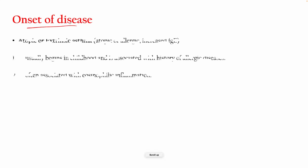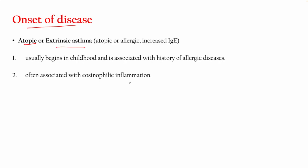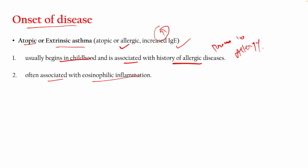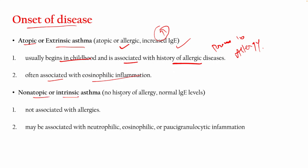Regarding onset of asthma: atopic or extrinsic asthma is an allergic type in which there is an increase in the level of IgE. It usually begins in childhood and is associated with a history of allergic diseases — patients are prone to allergy — and it is often associated with eosinophilic inflammation, meaning there will be an increase in eosinophil counts.